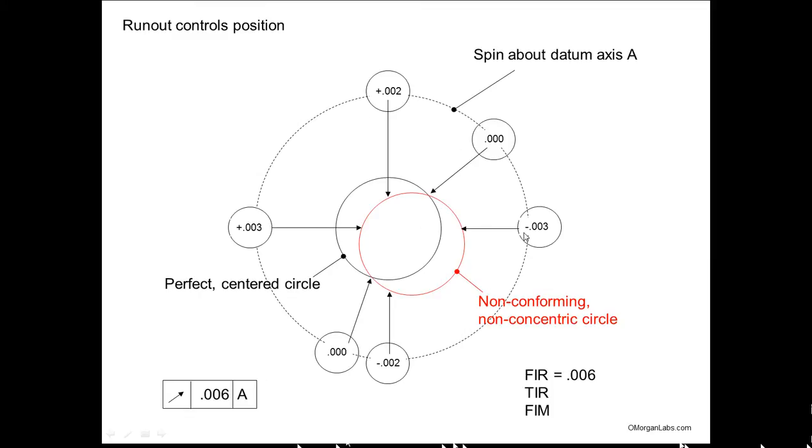Your largest negative reading is 3. Your largest plus reading is plus 3. So you add those two together and it's 6. So some people call it FIR, full indicated reading, 6 mils, or total indicated reading, 6 mils, or full indicated measurement. So those are the terms that you may see.